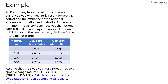At time zero, we have the interbank rates for 90 to 360 days, the US dollar spot interest rate, and the pound spot interest rate. We assume that the swap counterparties agree to a spot exchange rate of one pound to 1.31 US dollars. Let's calculate the annual fixed swap rates for British pounds and US dollars.